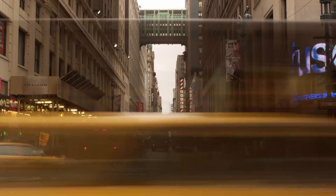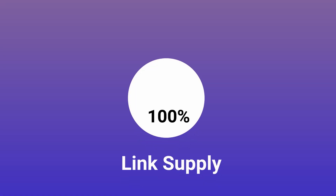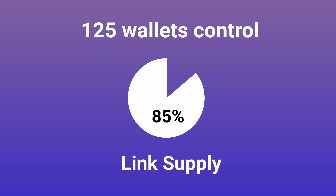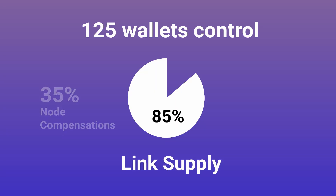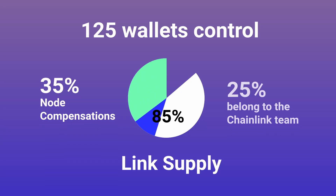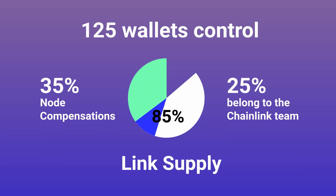Despite all the positive developments around the project, Chainlink has received some negative press. The project faced accusations of centralization when it was pointed out that just 125 wallets control 80% of the total link supply. On the surface, this suggests that the integrity of the network could be manipulated by a relatively small group of token holders, but upon closer inspection, 35% of this wealth is held in one wallet from which node operators are actually compensated, so over time it should continue to be more widely distributed.